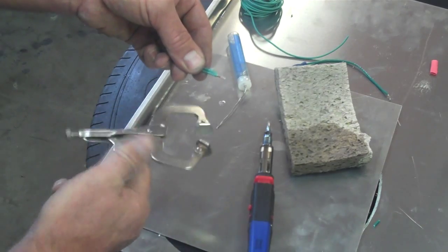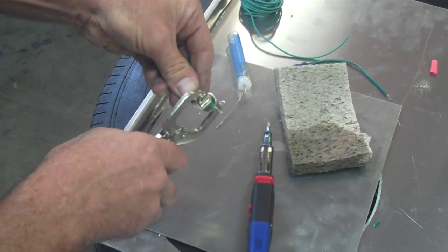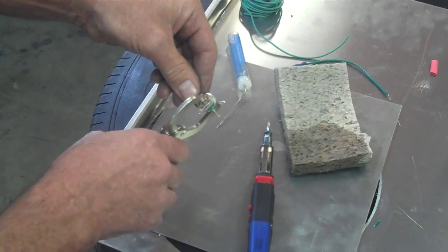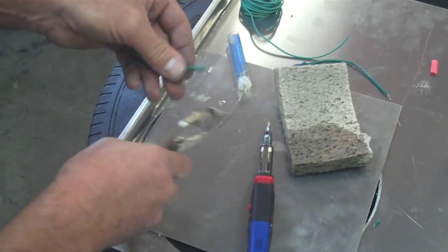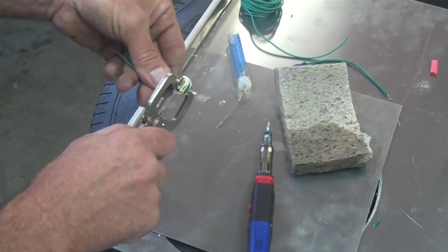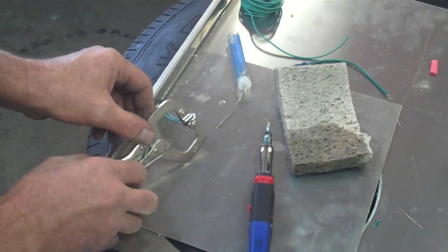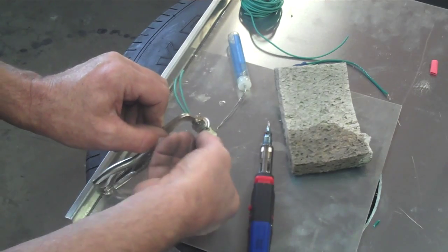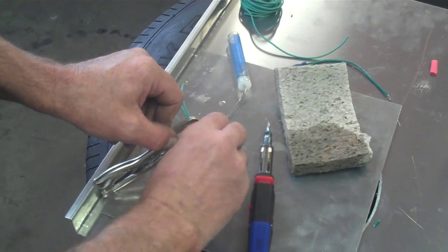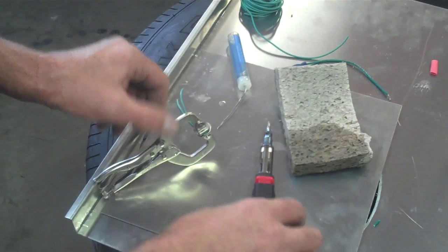We're going to put them back in the vice grips. Snug those up just a bit. Hold the wires nice and firm. There we go. Make sure the wires stay twisted together.